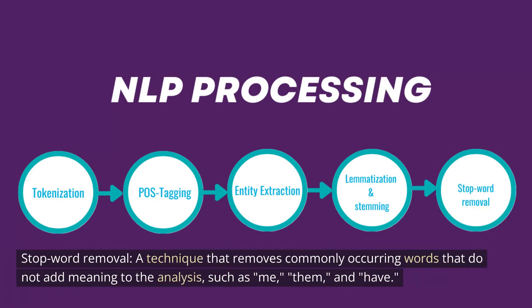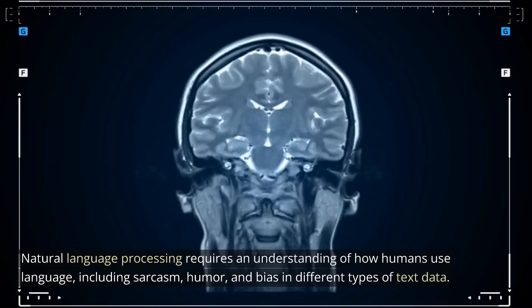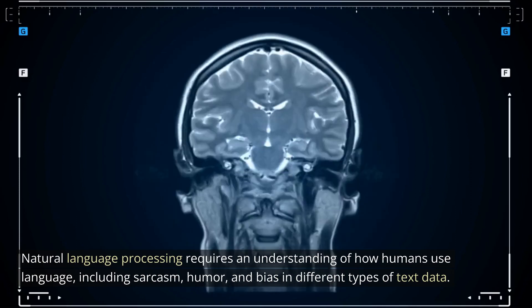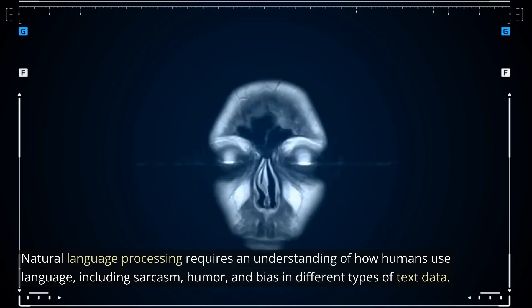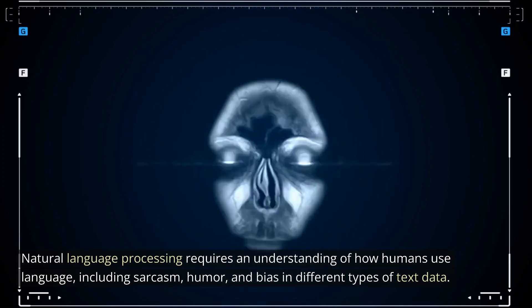5. Stop word removal, a technique that removes commonly occurring words that do not add meaning to the analysis, such as 'me', 'them', and 'have'. Natural language processing requires an understanding of how humans use language, including sarcasm, humor, and bias in different types of text data.